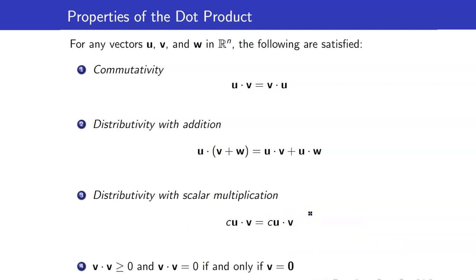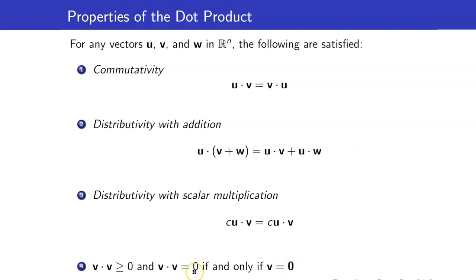And lastly, the dot product of a vector with itself is always greater than or equal to zero. It will only be equal to zero if and only if the vector is the zero vector. Take note of the notation — when bold, that means the zero vector; this zero is the real number zero.